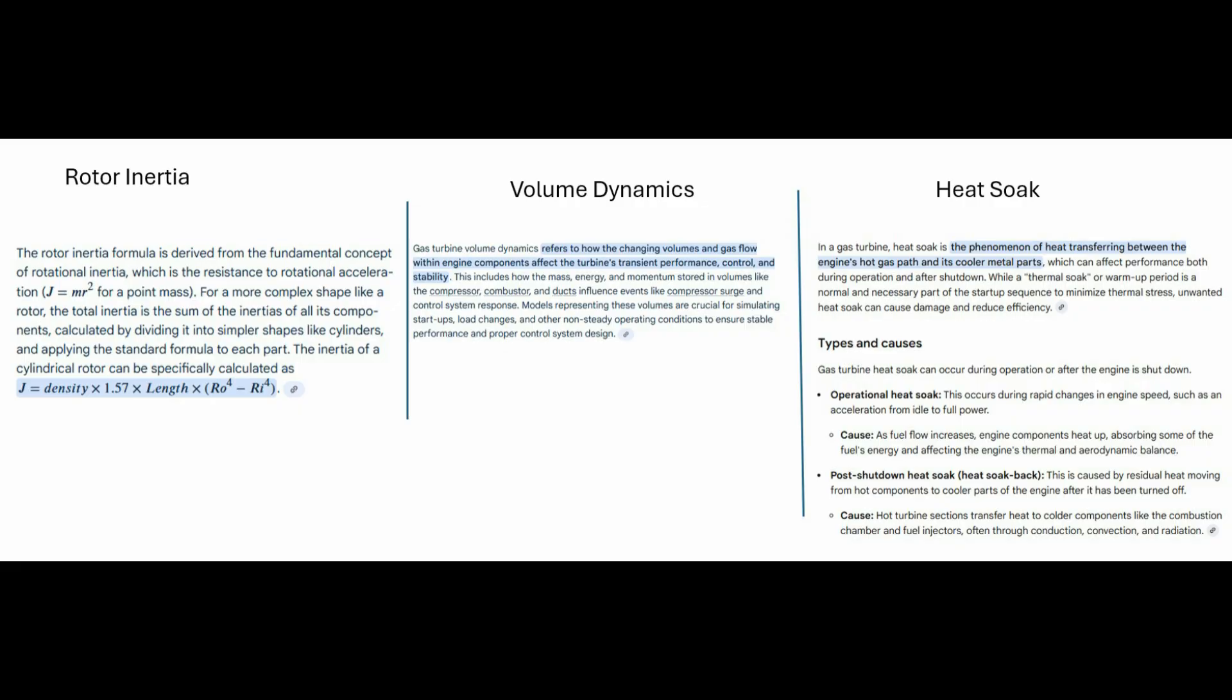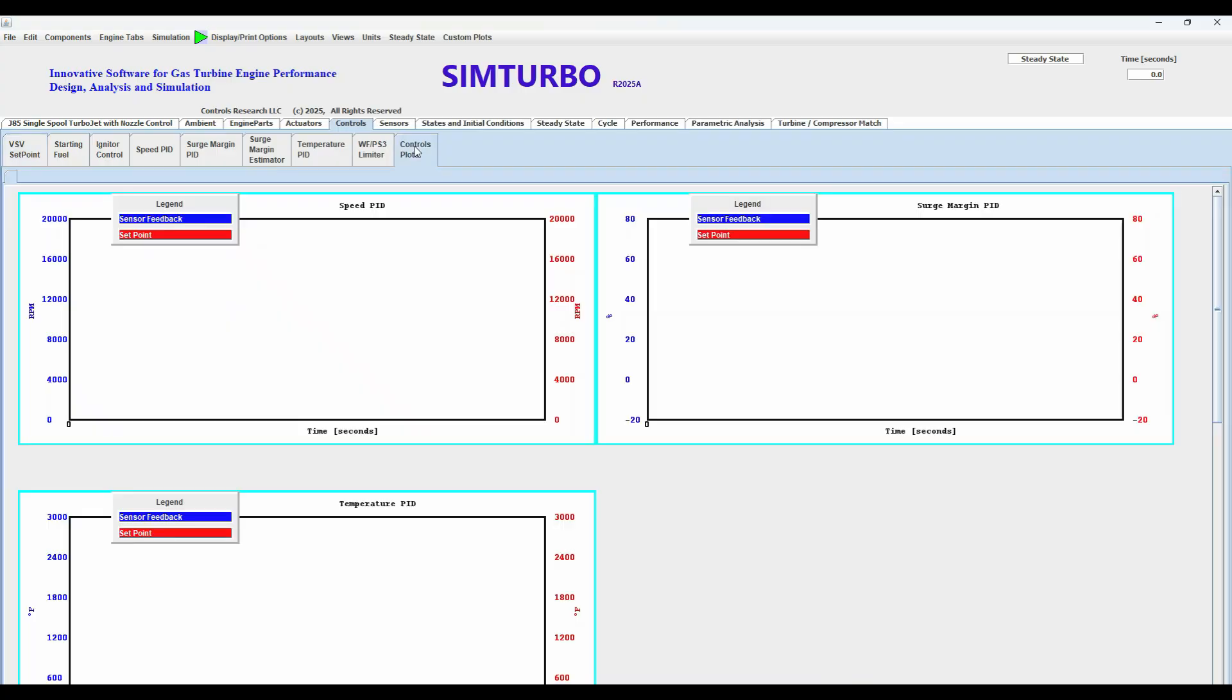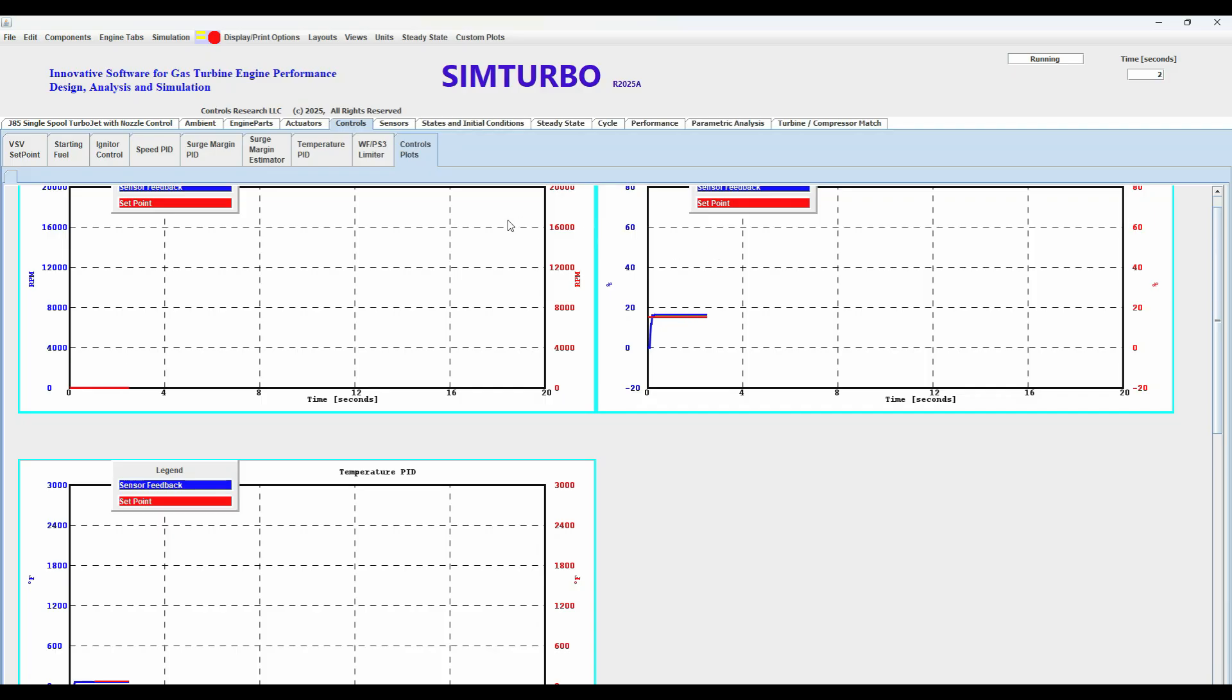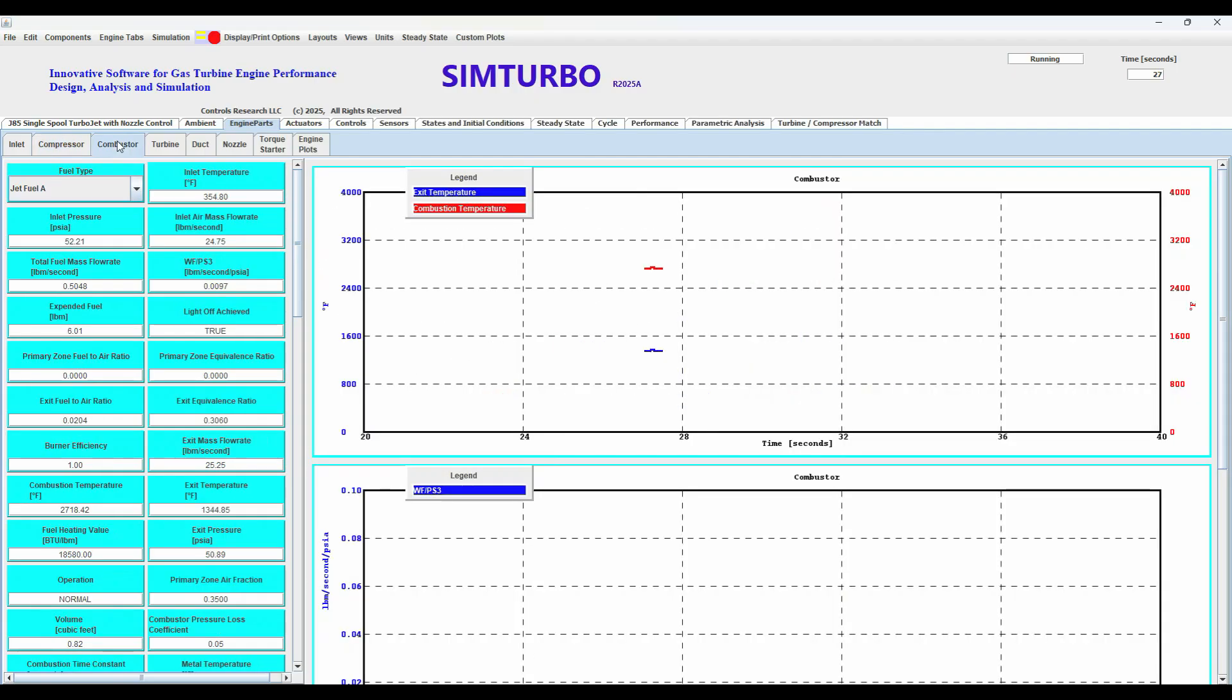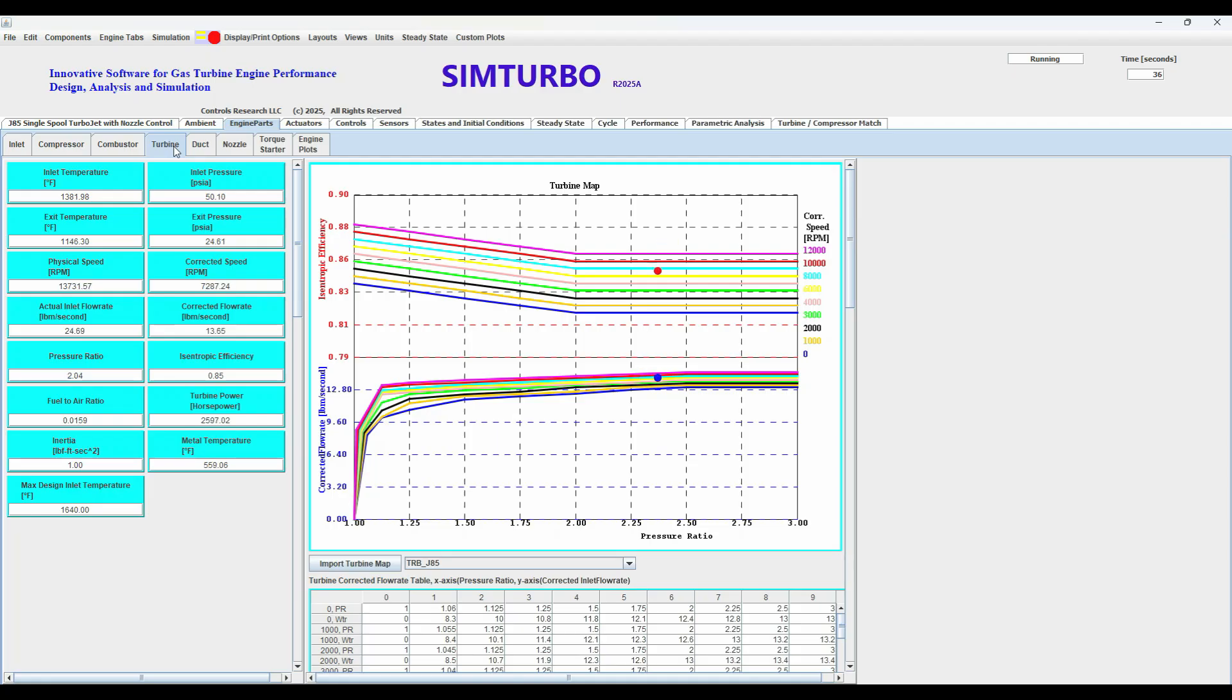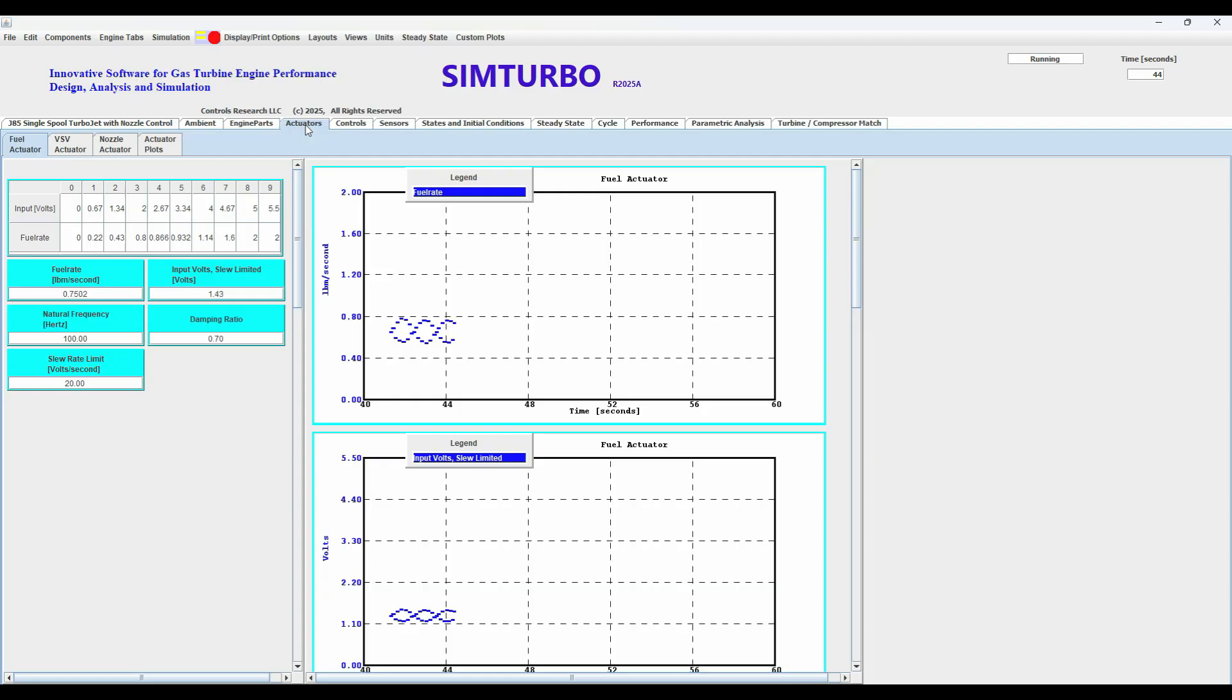So putting it all together, what's the big takeaway here? These 0D and 1D models sound like this essential bridge. They really are. They provide that crucial speed needed for the early conceptual design work, for iterating quickly, for tuning control systems before you commit huge resources to the really expensive detailed 3D optimization. Minutes instead of weeks for a simulation run. And connecting this back, it really shows the power of smart simulation, of simplifying intelligently. Think about one of the most complex, violent things that can happen in an engine - compressor surge. That chaotic flow breakdown. Amazingly, you can actually capture the fundamental physics of surge using these reduced order models. There's a famous one, the Greitzer lumped parameter model. It boils that incredibly complex instability down to just two coupled ODEs. So even for something really chaotic, simplifying can give you deep insight. It's like finding the physics cheat code sometimes. Reducing the problem reveals the core dynamics.